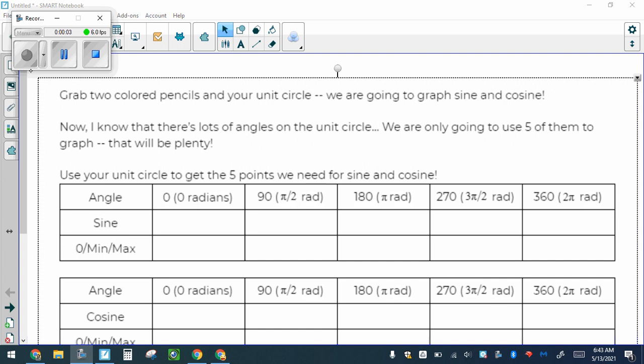Here we're going to start graphing sine and cosine. We found all their values in tasks 6, 7, and 8, and now we're going to start graphing those. There's lots of angles on the unit circle, but we don't need that many to talk about the graph. Please grab some colored pencils—we're going to need two, one for sine and one for cosine.